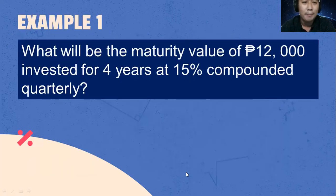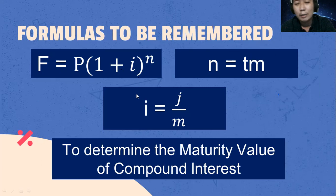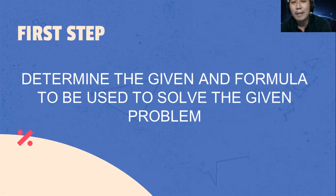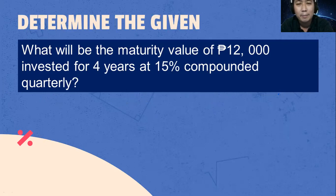Let's now try to solve this problem. What will be the maturity value of 12,000 pesos invested for four years at 15% compounded quarterly? These are the formulas to be used. F is equal to the principal amount P multiplied by the quantity of 1 plus i raised to n. In order to get the value for i, that is J over M — the nominal interest rate divided by the number of compoundings per year. Then n is equal to the time multiplied by the number of compoundings per year.